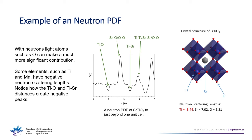Here's a neutron PDF of strontium titanate, the ideal cubic perovskite structure. With neutrons, you can have negative scattering lengths — so the dip here is actually your titanium-oxygen peak in the PDF, because titanium has a negative neutron scattering length. Similarly, the titanium-strontium peak is negative, and then you have the strontium-oxygen peak as a positive feature.